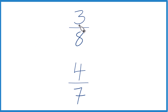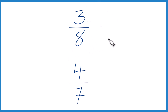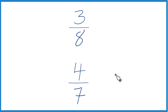Let's take a look at which fraction is greater: 3 eighths or 4 sevenths. Here's how you could do it. First, you could take a calculator, put 3 divided by 8, then 4 divided by 7, and just compare those decimals. That would tell you which one of these fractions is bigger.